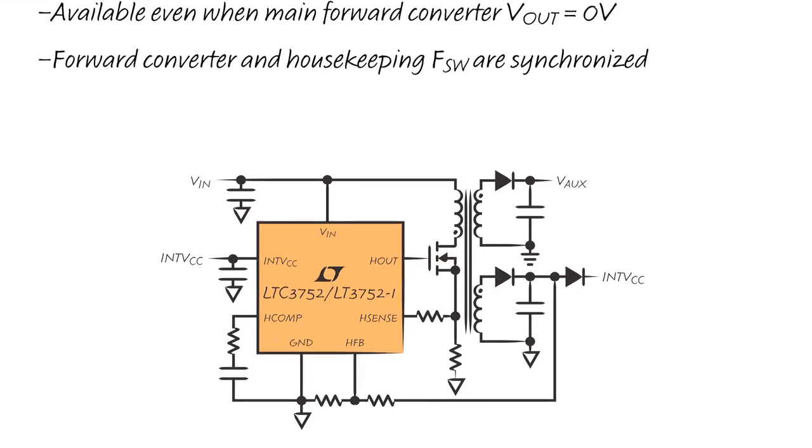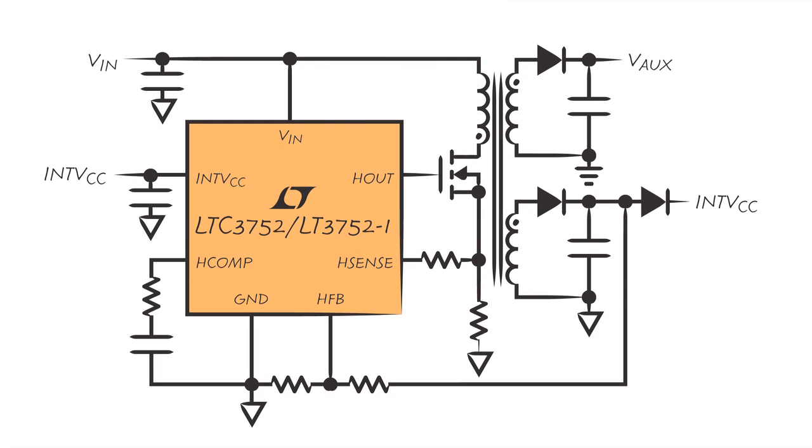The housekeeping supply can be used to overdrive the Intel VCC pin to take power outside of the part, improve efficiency, provide additional drive current, and optimize the Intel VCC level. The housekeeping supply also allows bias to any secondary side IC before the main forward converter starts switching, removing the need for external startup circuitry on the secondary side.